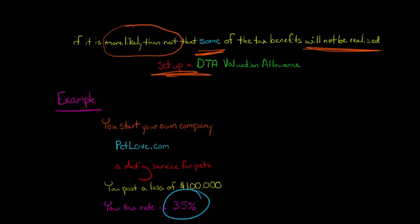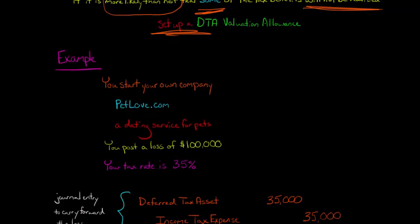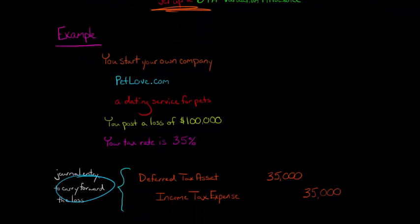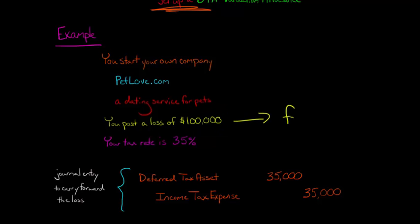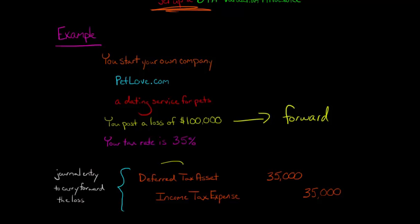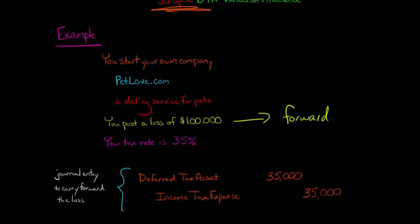Your tax rate is 35%. The good news is you can carry forward a tax loss to offset any future taxable income. So this $100,000 can be carried forward, and we make a journal entry for that. We debit Deferred Tax Asset — remember, that means future tax savings. We don't debit for $100,000 because we multiply by the tax rate of 35%, so $100,000 times 35% equals $35,000. We debit Deferred Tax Asset for $35,000 and credit Income Tax Expense for $35,000.